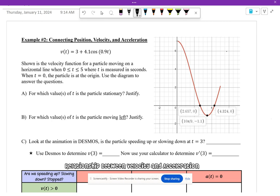So this gives us the velocity function for an object that's moving on a straight line from zero to five seconds. When t equals zero, the particle is at the origin. Use the diagram to answer the questions.